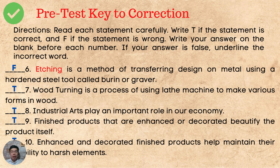Number 7: Woodturning is a process of using the lathe machine to make various forms in wood. The answer is letter T — True. Number 8: Industrial arts play an important role in our economy. The answer is T — True. Number 9: Finished products that are enhanced or decorated beautify the product itself. The answer is letter T — True. Number 10: Enhanced and decorated finished products help maintain their durability to harsh elements. The answer is T — True.